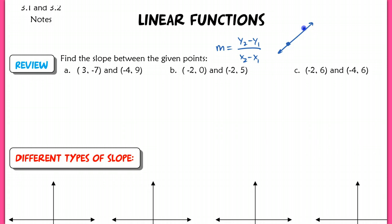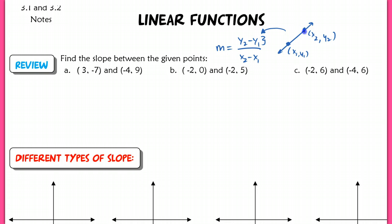So if we had two points, x1, y1, and x2, y2, I would use this formula here. Notice that this represents the change in your y direction — that vertical segment right here. And x2 minus x1 represents the change in your horizontal direction. That horizontal line here represents the change in the x.